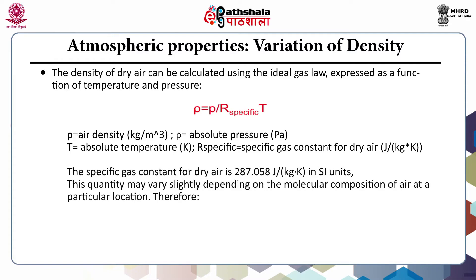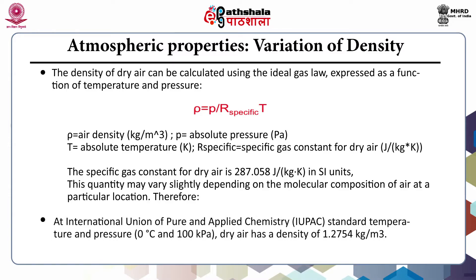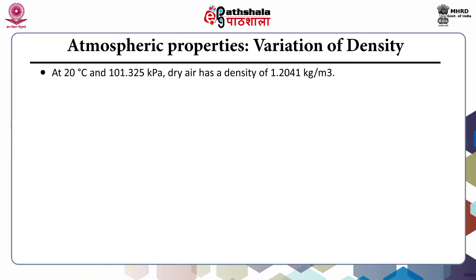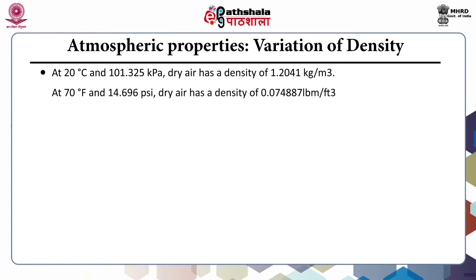The specific gas constant for dry air is 287.058 joules per kilogram per Kelvin in SI units. This quantity may vary slightly depending on molecular composition of air at a particular location. At STP (0°C and 100 kPa), dry air has a density of 1.2754 kg/m³. At 20°C and 101.325 kPa, dry air has a density of 1.2041 kg/m³. At 70°F and 14.696 psi, dry air has a density of 0.07487 pounds per cubic foot.